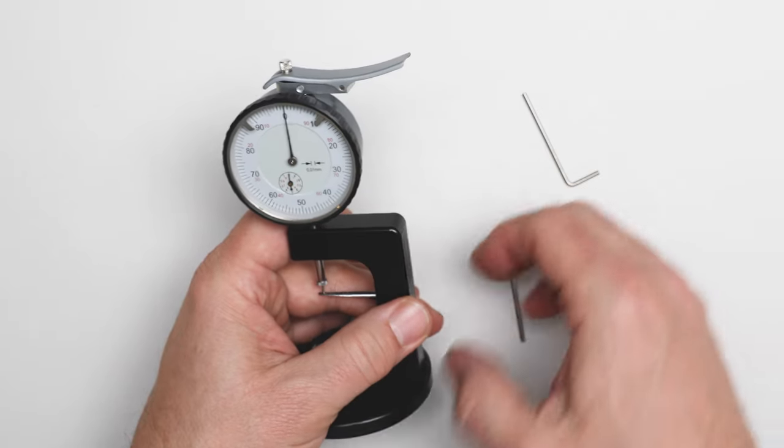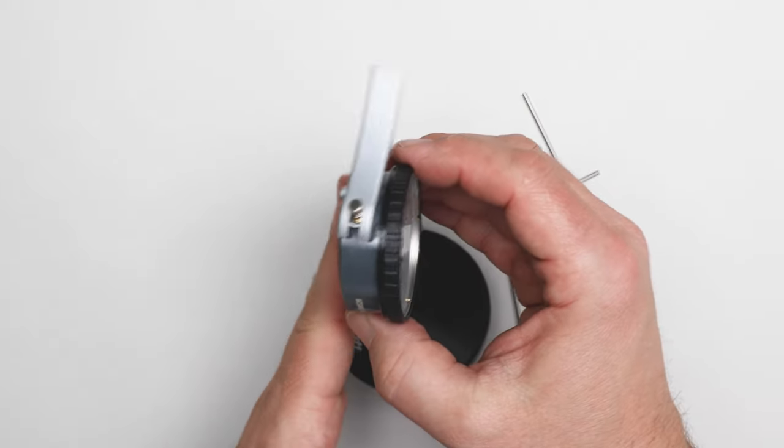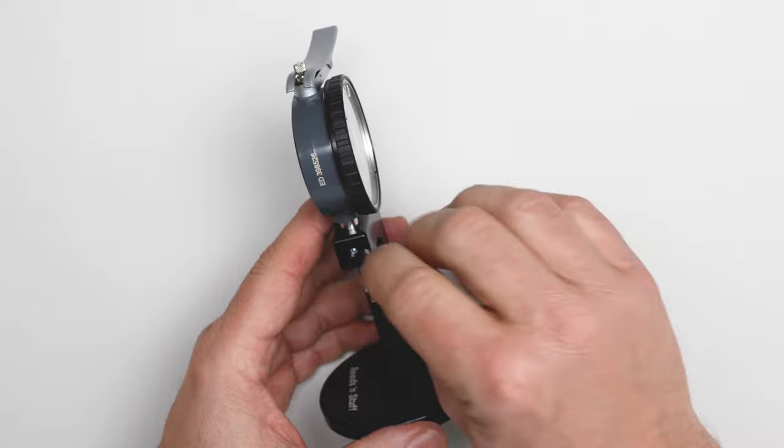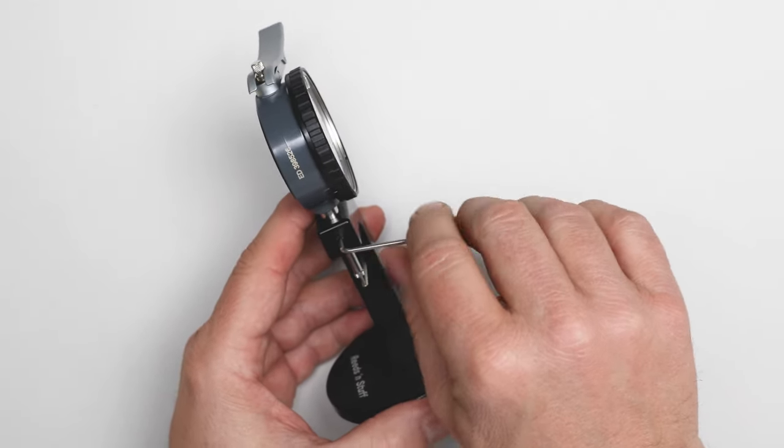Before I finally tighten the screw, I check the alignment. I want this to be parallel. It's only for cosmetic reasons. It just looks better. I tighten this screw.